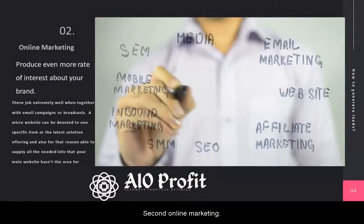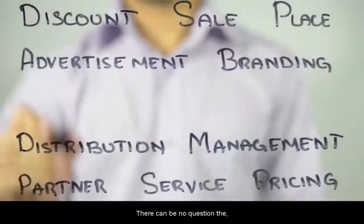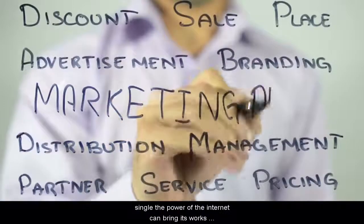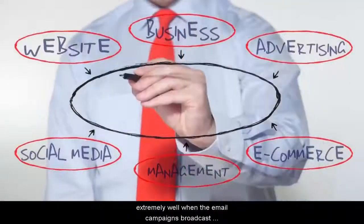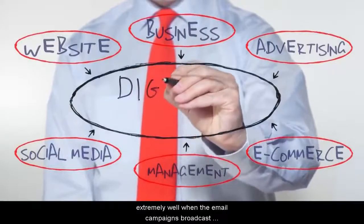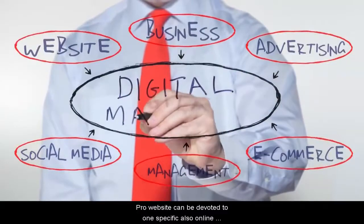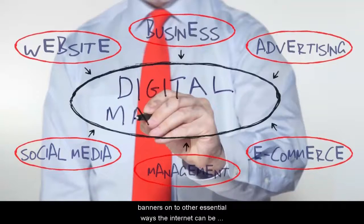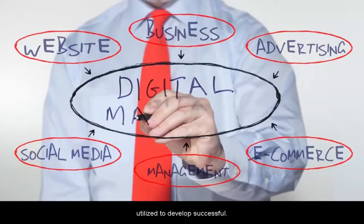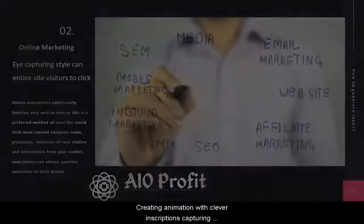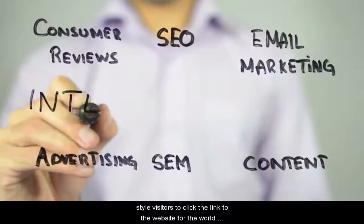Second, online marketing. There can be no question that harnessing the power of the internet can bring great returns. Developing microsites specifically works well to produce even more interest about your brand. These work extremely well together with email campaigns or broadcasts. A micro-website can be devoted to one specific item or the latest solution or offer. Flash presentations and online banners are two other essential ways the internet can be utilized to develop successful list building. Incorporating animation with clever captions or eye-capturing style can entice visitors to click the link to your site or micro-website.